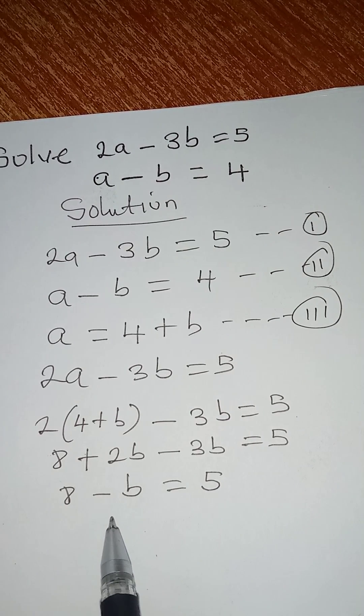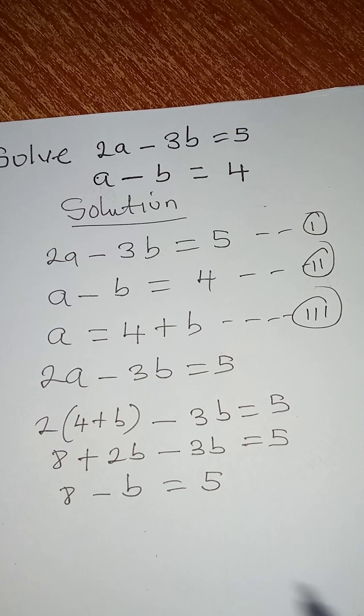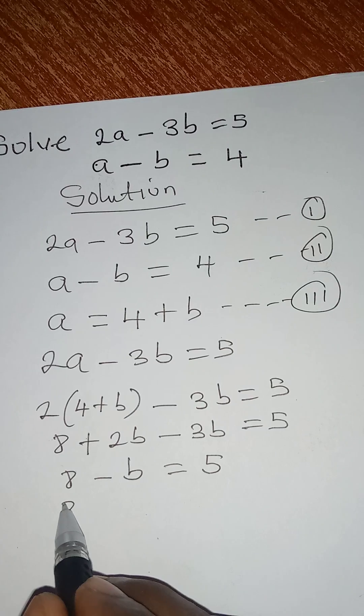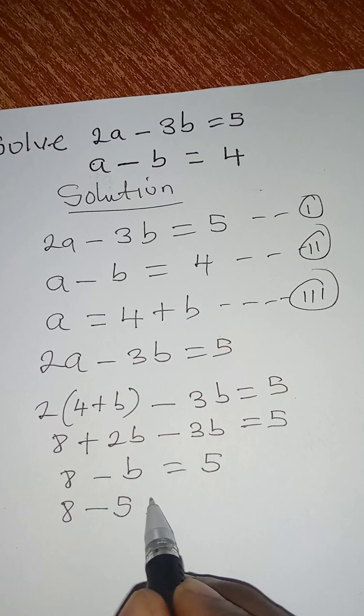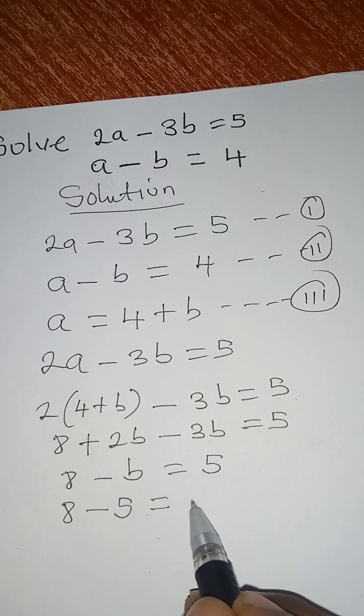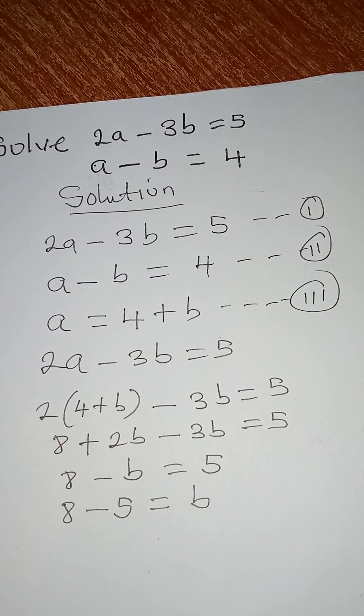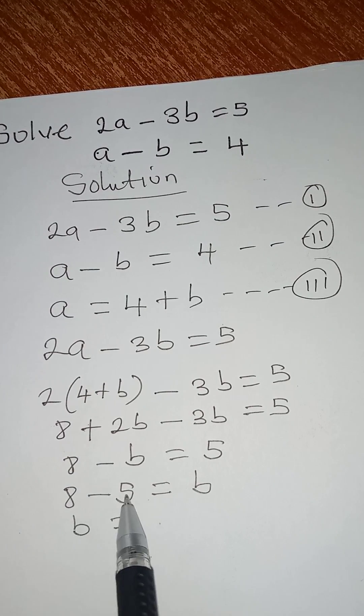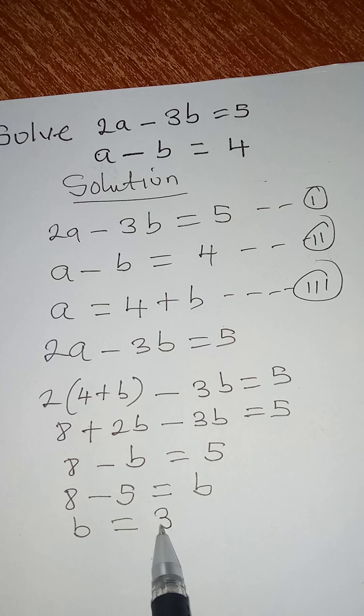Now the only unknown is b. So I can collect like terms and if I do that I will have 8 minus 5 to be equal to I'm taking b to the right and it becomes plus b. That's positive b. So this means that the value of b is equal to 8 minus 5 and that is 3.